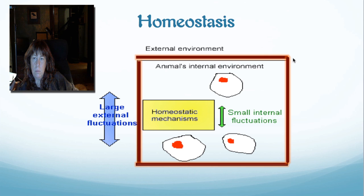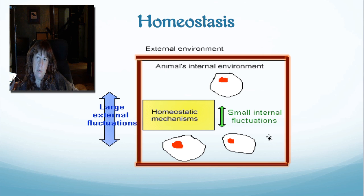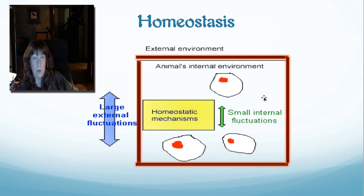If we look at this space outlined by the red box, this is supposed to be an organism, and in an organism ourselves — represented by these frilly-looking things — the environment here needs to be kept pretty stable. We have small fluctuations; we always do, and sometimes we need them.